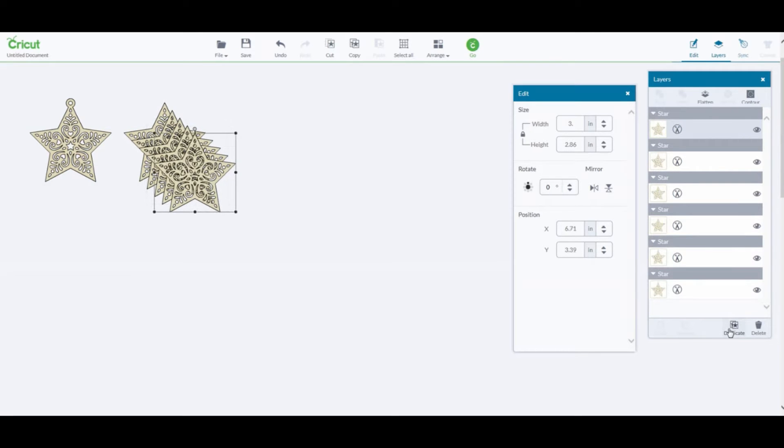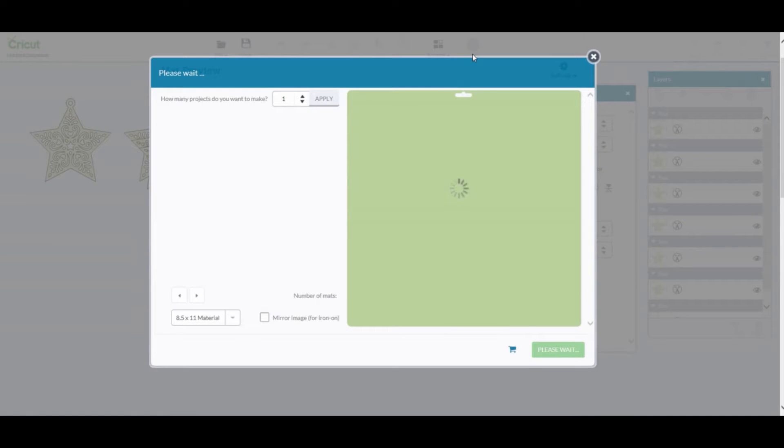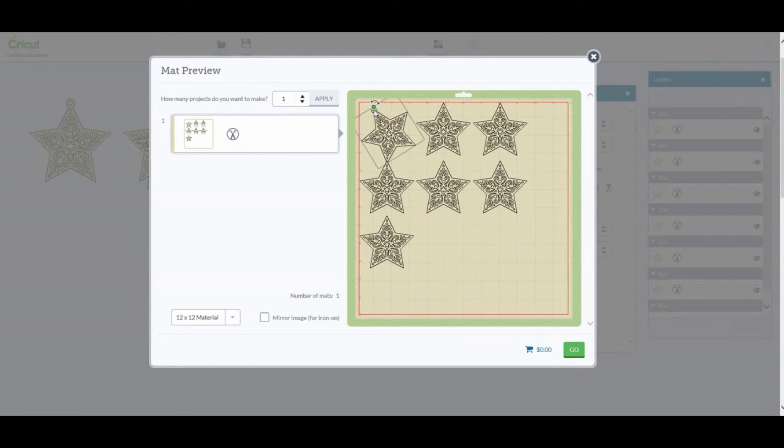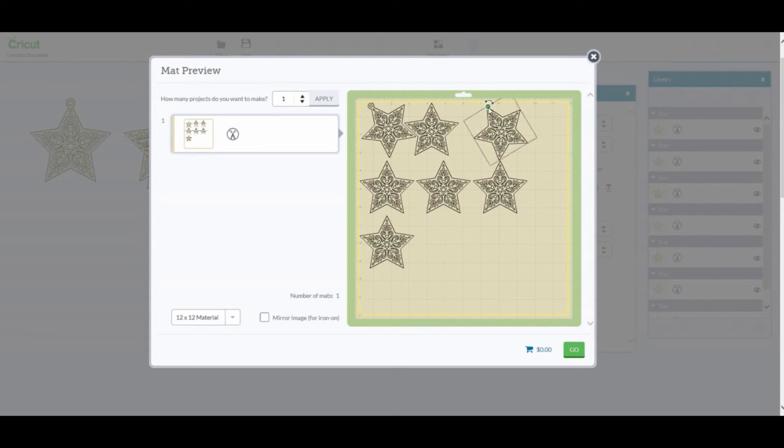Now let's hit go and take a look at what we have on the mat preview. As I mentioned in my previous video tutorial, I have noticed that while Cricut software will fit the items to be cut on as few mats as possible, it does not always place the items in the most economical locations to save cardstock.